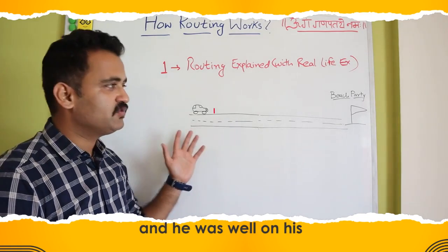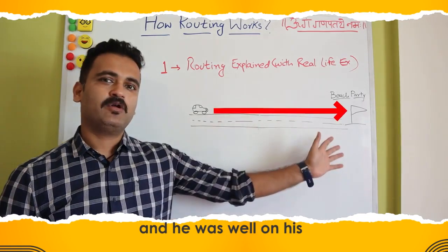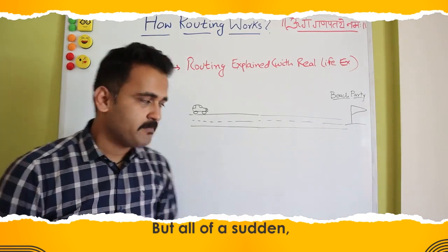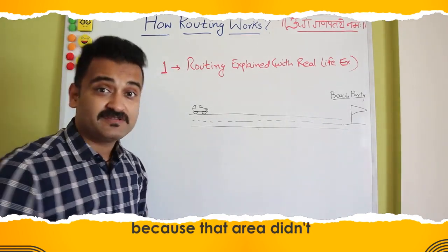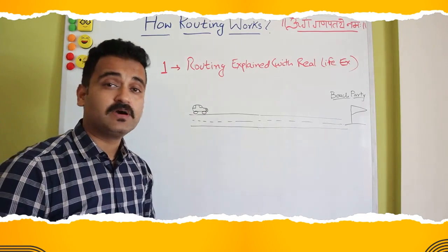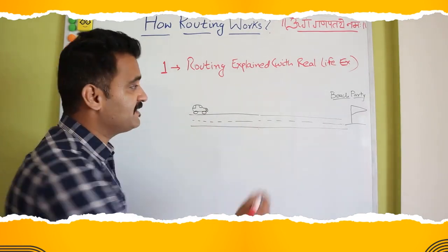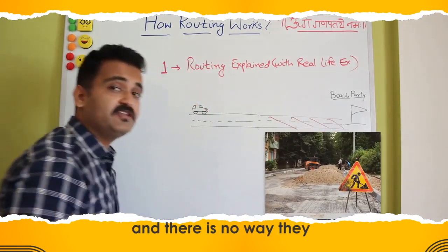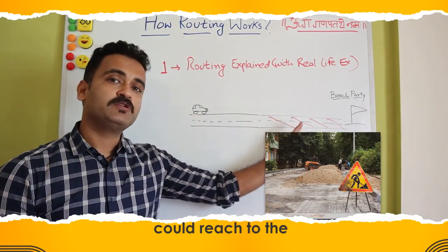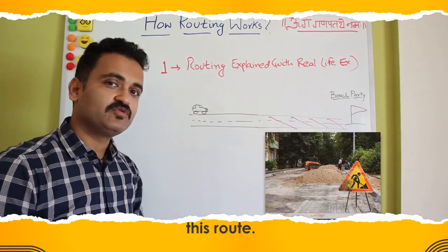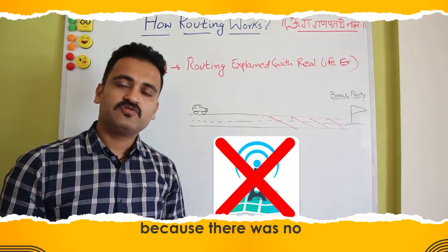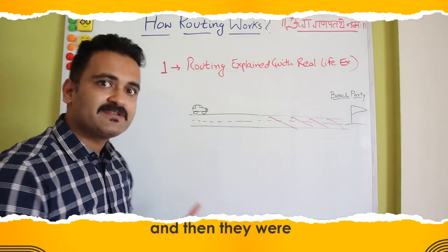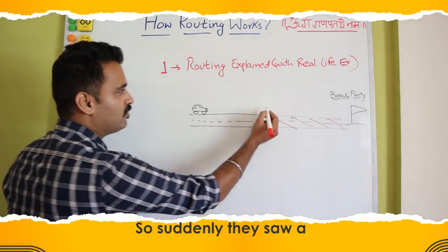Someone took the main route and was well on his way to reach the destination along with his friend. But all of a sudden, because that area didn't have network coverage, they realized that the whole path was under construction and there was no way they could reach the destination on time. With no network signal and no Google Maps, they were stuck.